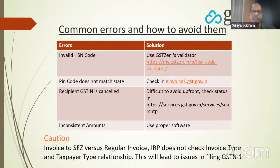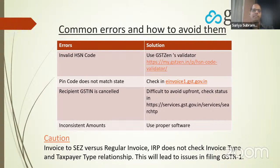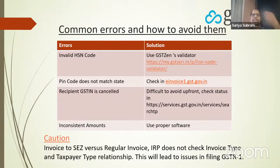Common errors we have seen when people go onboard: HSN code errors — please use GST Zen's HSN validator. Pin code usually doesn't match the state or is wrong — please check it in the portal. If the recipient GST number gets cancelled — GST numbers get cancelled very often — please check upfront. Once you see the error, react to it. Use proper software and you will not get schema errors.